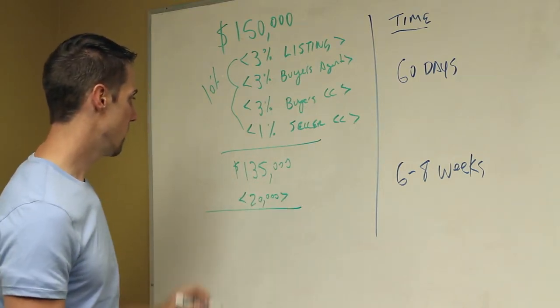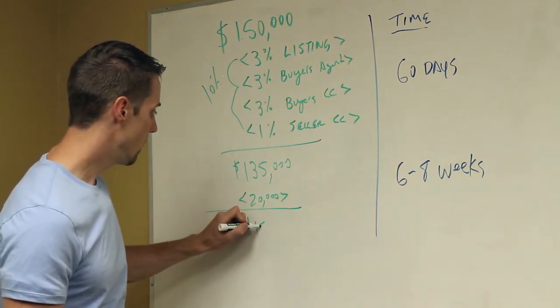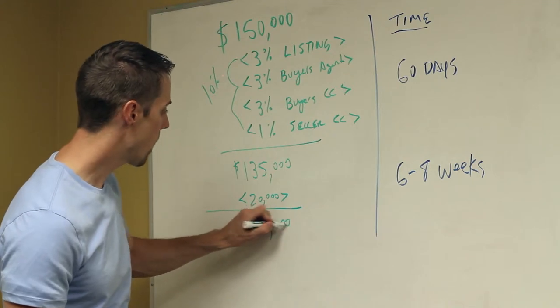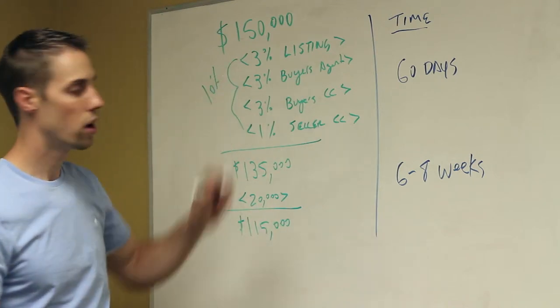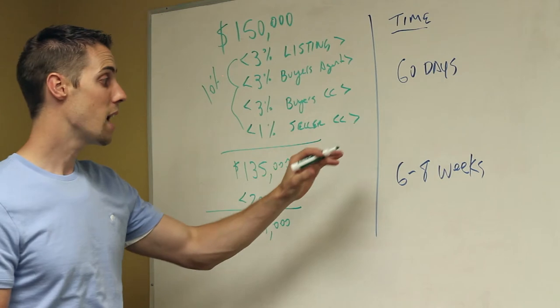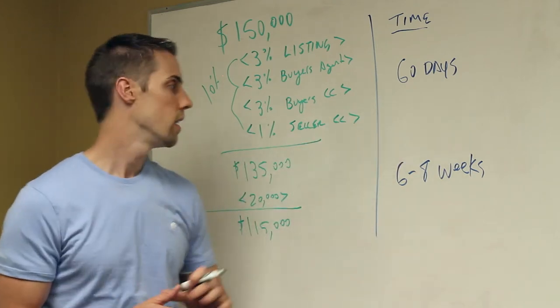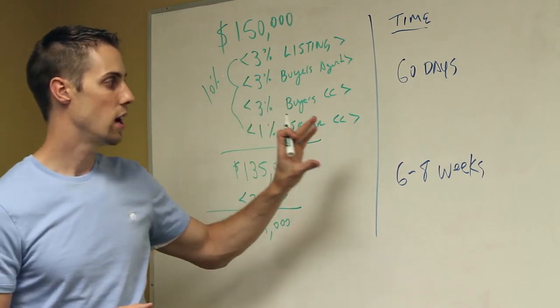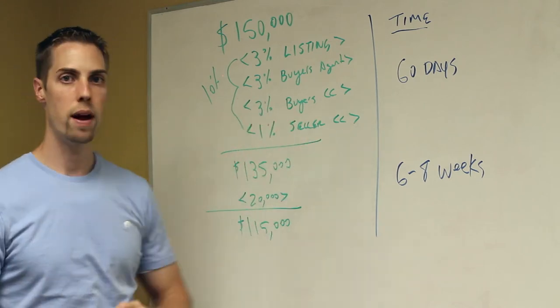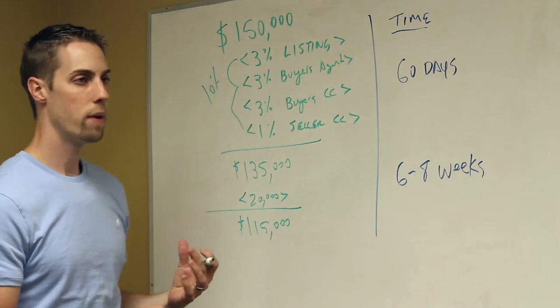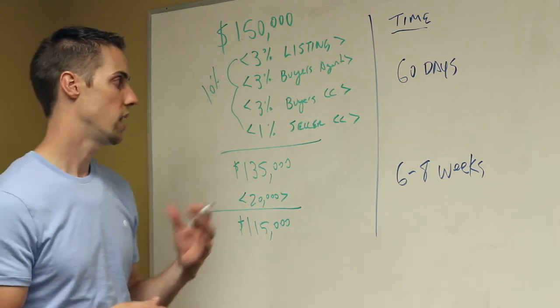Now you're left with $115,000 net in your pocket for a house that you said is worth $150,000. The time it took to do that was two months in repairs and two months in selling. So at your best, you've got a house that's going to sell in four months after you've done the repairs, after you've put the money into that, and you're hoping all that time that the market doesn't change.